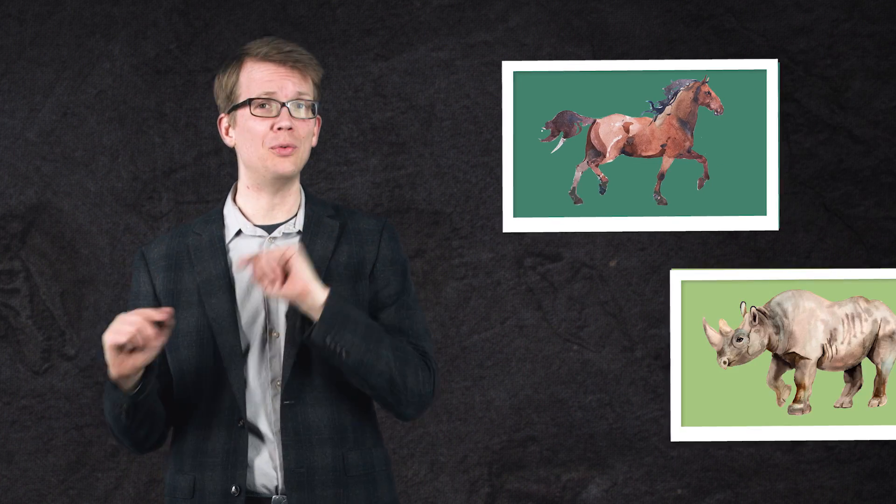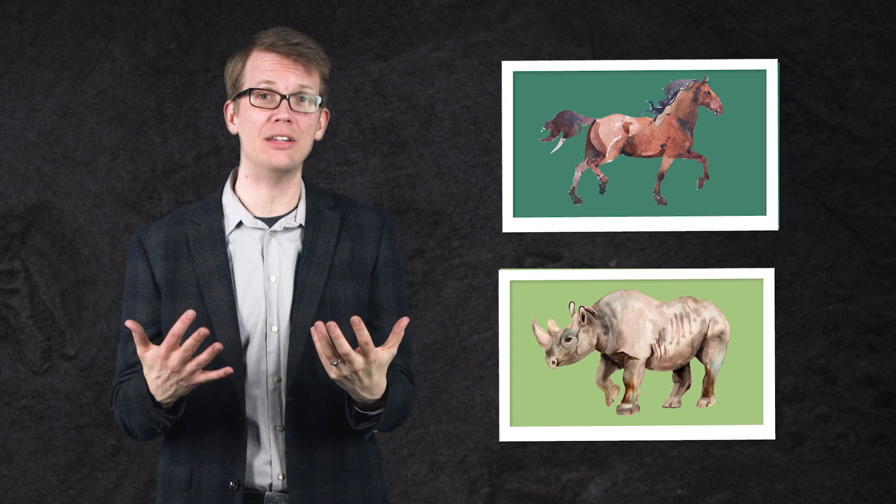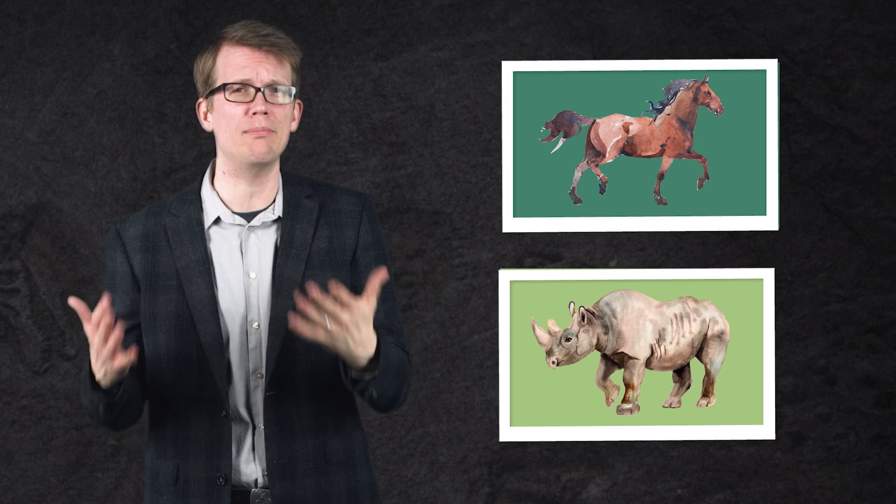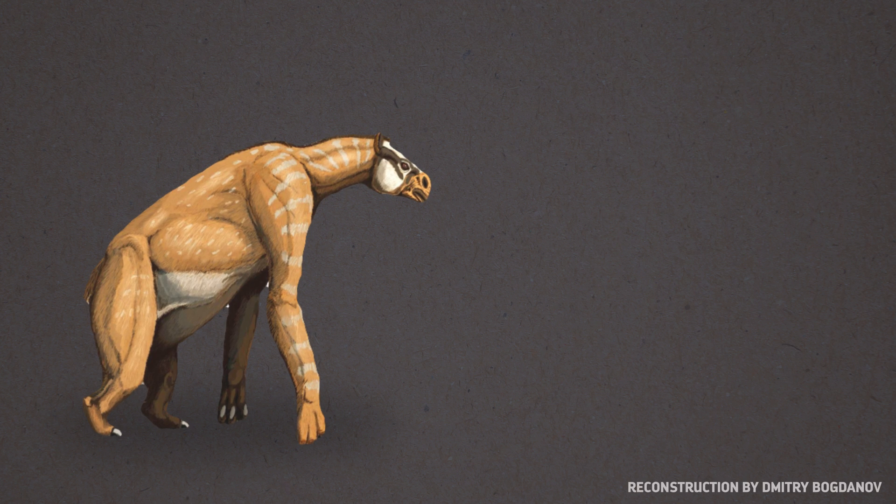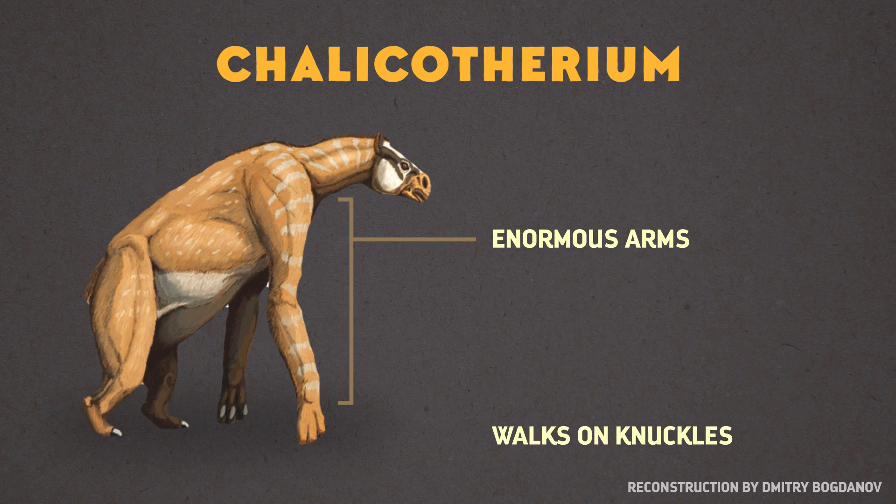They're both closely related to each other and to horses and rhinos, and they both developed highly specialized adaptations that helped them exploit their main source of food, the leaves at the top of trees. The first animal is known as Chalicotherium, and it wound up having enormous arms and walking around on its knuckles, kind of like a gorilla.